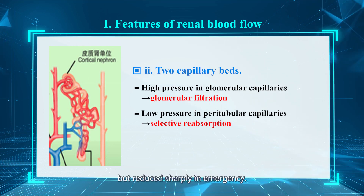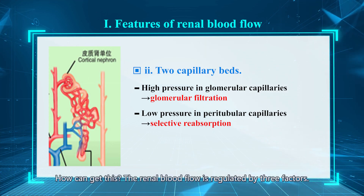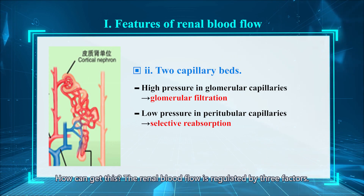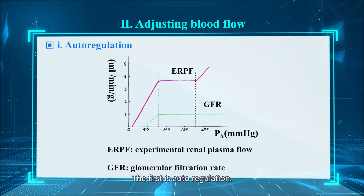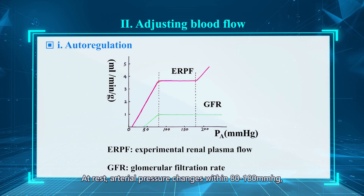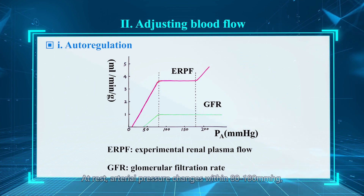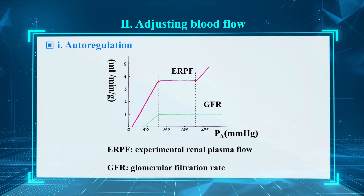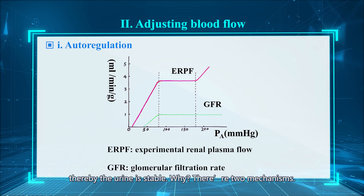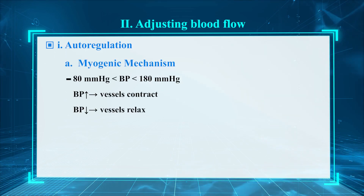The renal blood flow is stable at rest but reduced sharply in emergency. The renal blood flow is regulated by three factors. The first is autoregulation: at rest, when arterial pressure changes within 80 to 180 mmHg, renal blood perfusion remains relatively stable, and thereby urine output is stable. There are two mechanisms — the first is the myogenic theory.